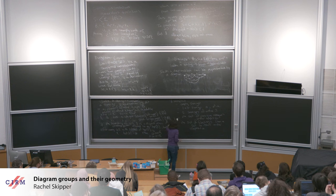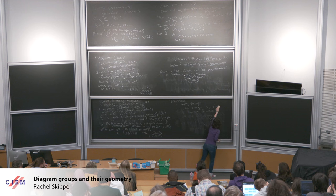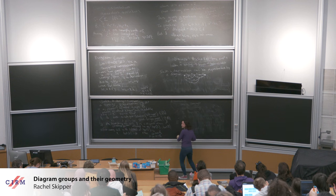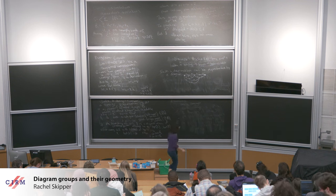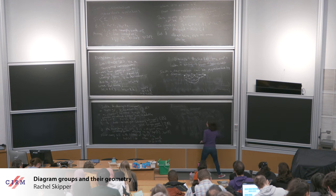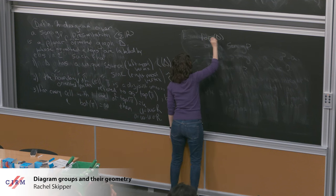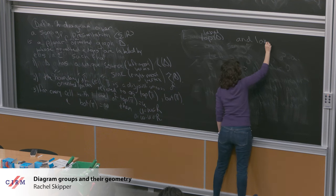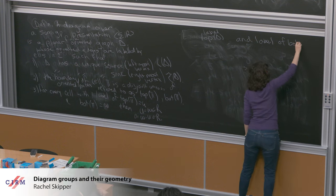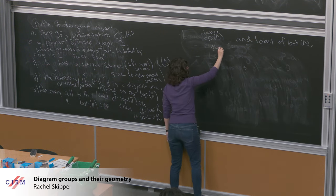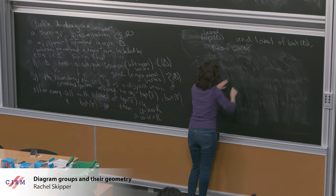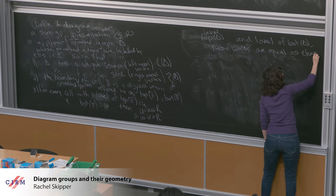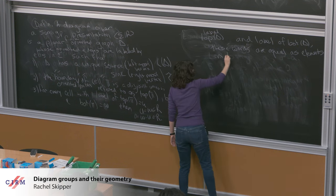All I've talked about so far is labeling the top and bottom of individual cells in the diagram. But you can also talk about the top of Δ and the bottom of Δ. Because these are finite derivations and finite graphs, if I look at the label of top(Δ) and the label of bot(Δ), these are equal words in the semigroup — equal as elements in the semigroup given by the presentation.